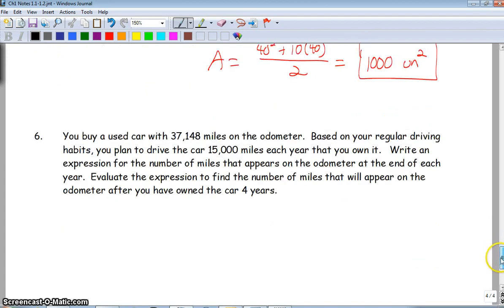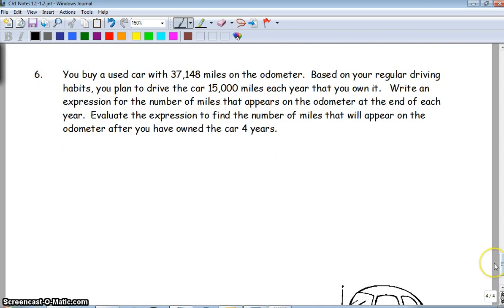Okay, last one. You buy a used car with 37,148 miles on the odometer. Based on your regular driving habits, you plan to drive 15,000 miles each year that you own it. Write an expression for the number of miles that appear on the odometer at the end of each year. Evaluate that expression when you have it after four years. Well, since I'm dealing with years, and since you look at this and go, we're starting out here, we're adding this each year. This is a straightforward linear expression you have to come up with. Think back to when you did slope intercept form. Your intercept would be 37,148 plus your slope is what's changing every year, 15,000 miles, times T. That's my variable, where T is in years.